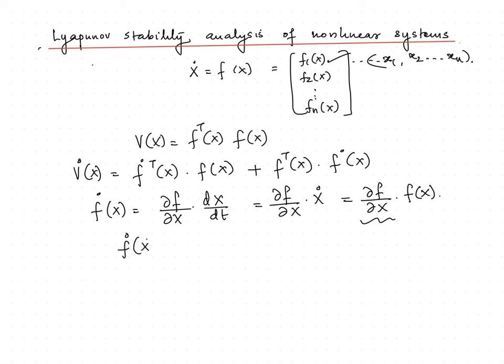f dot of x can be written as J(x) into f(x), where J(x) is the Jacobian matrix.